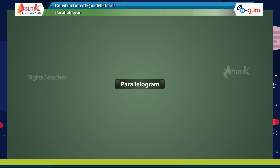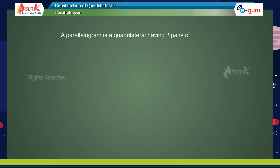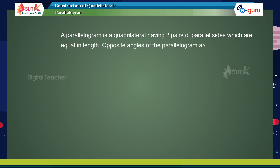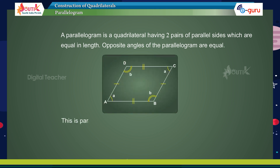Parallelogram: A parallelogram is a quadrilateral having two pairs of parallel sides which are equal in length. Opposite angles of the parallelogram are equal. This is parallelogram ABCD, where angle A equals angle C.